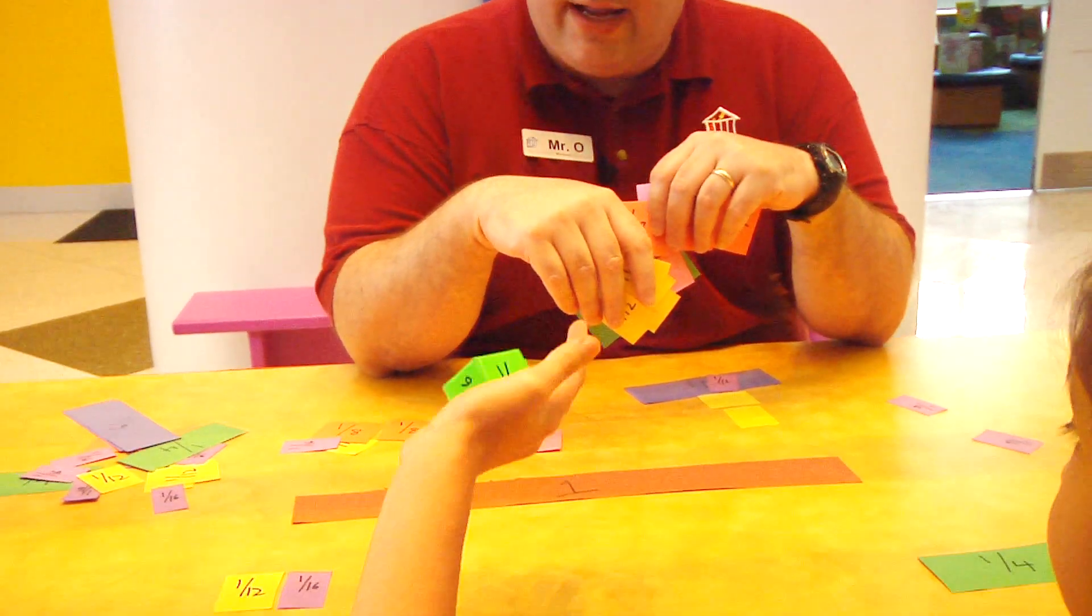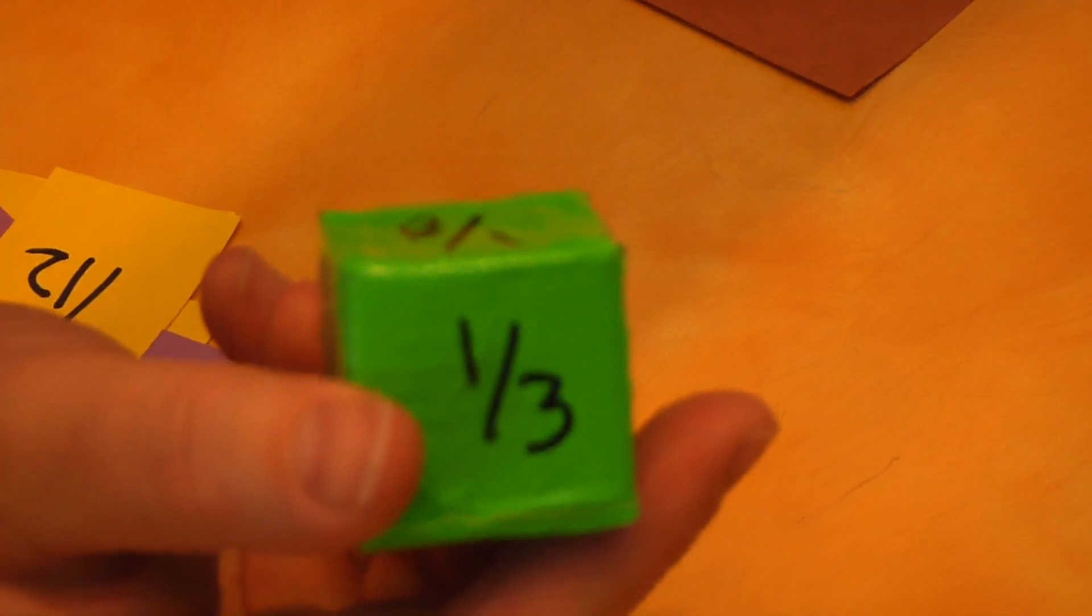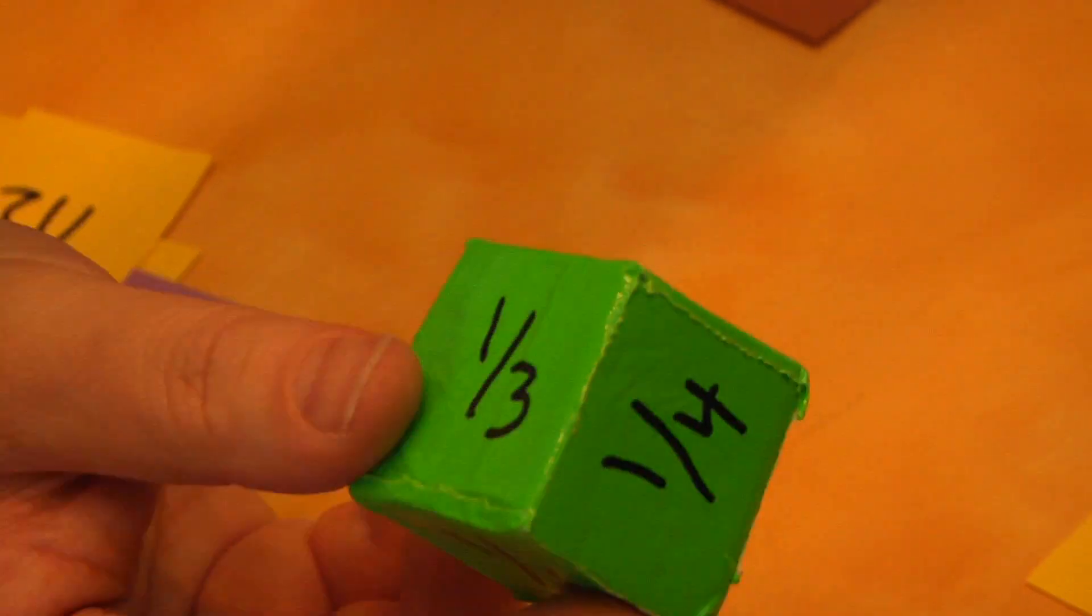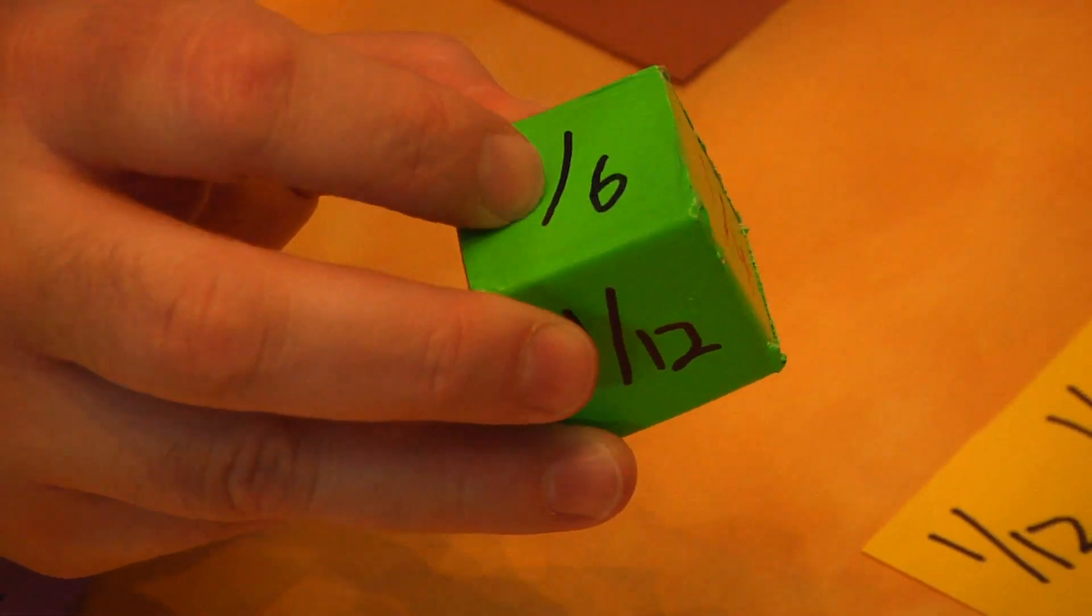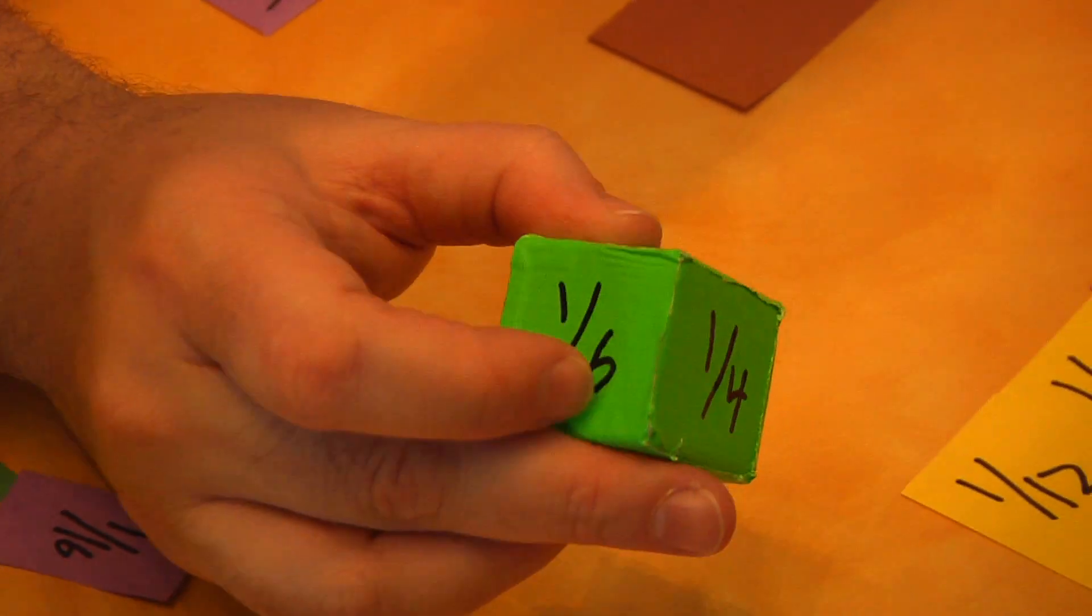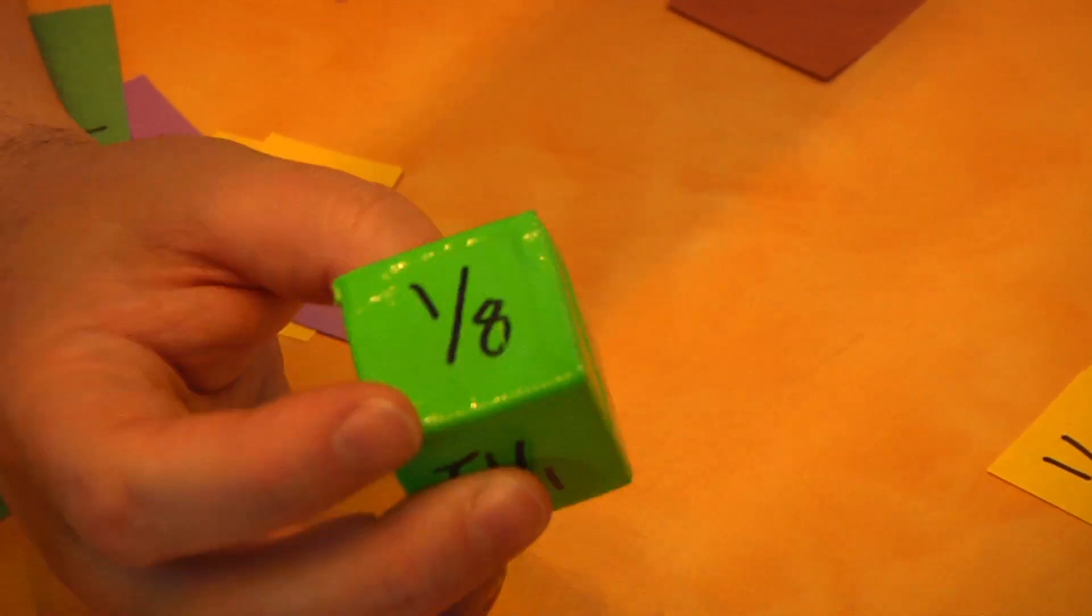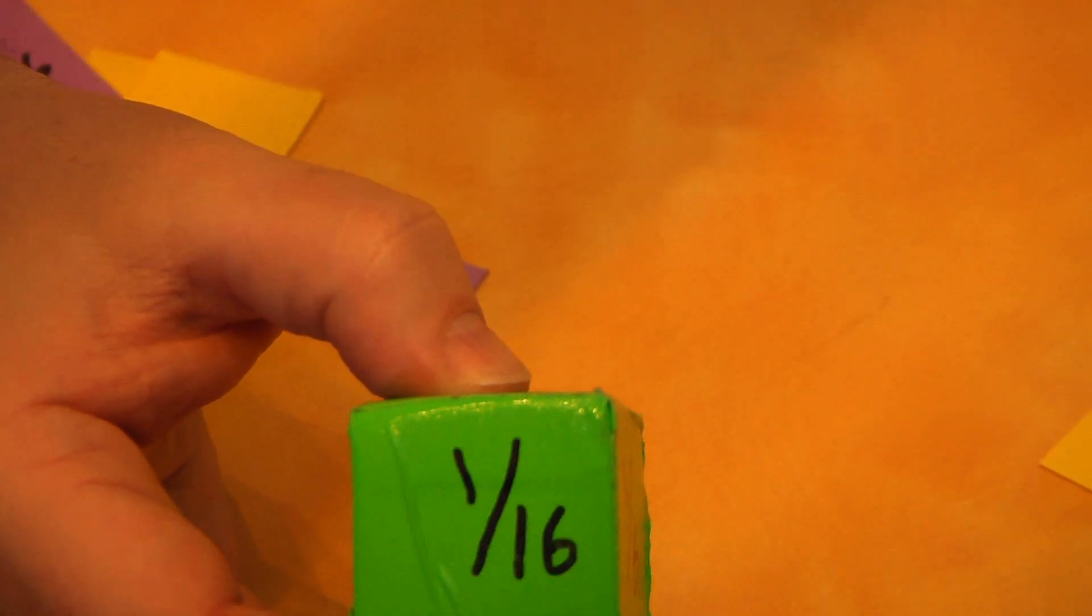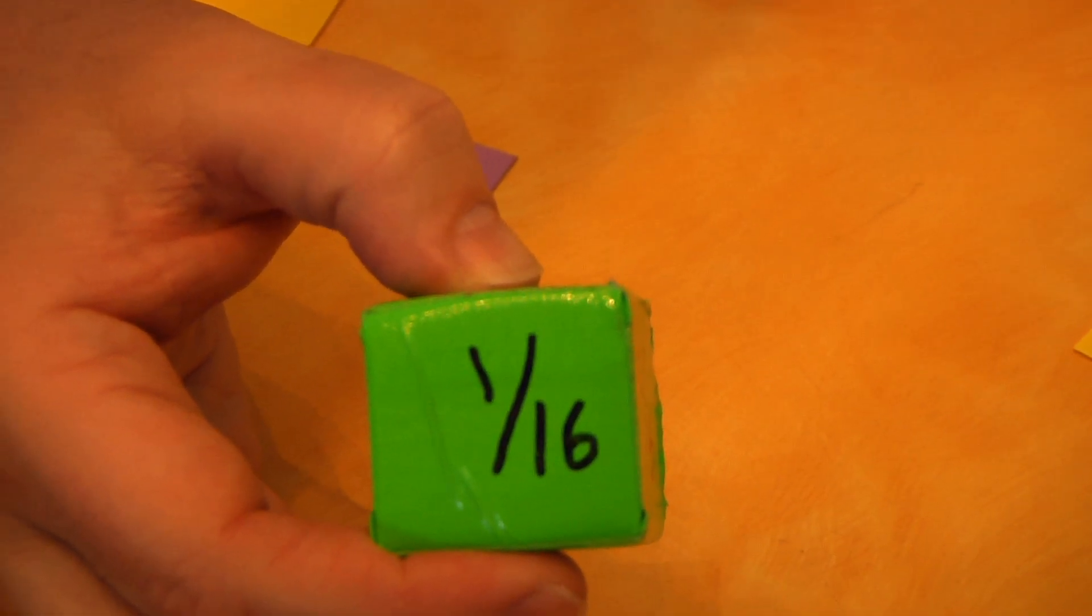So we've taken a die and covered it with tape and labeled it, but you can just take a die and cover it with stickers. Then label the sides with one third, one fourth, one sixth, one eighth, one twelfth, and one sixteenth. We're skipping one half because it makes the game go too fast.